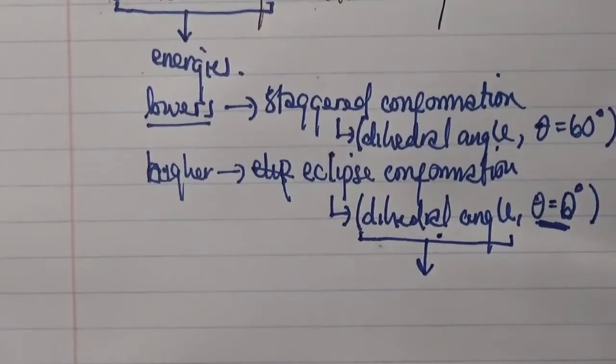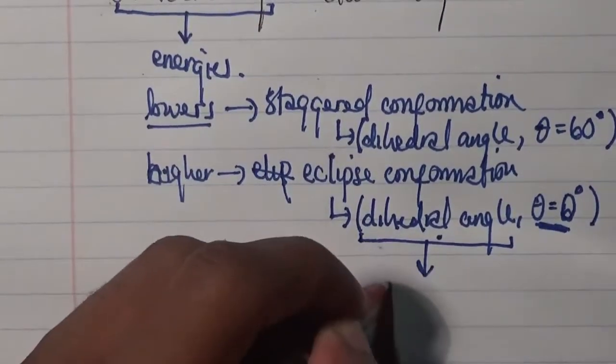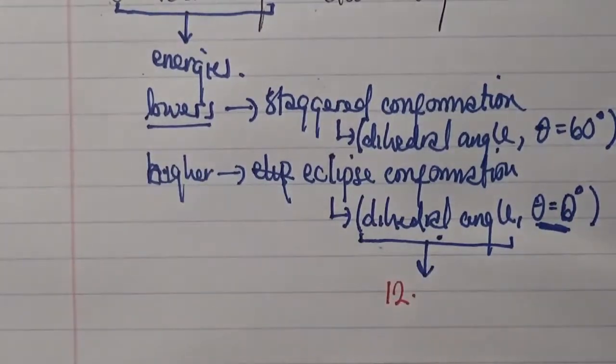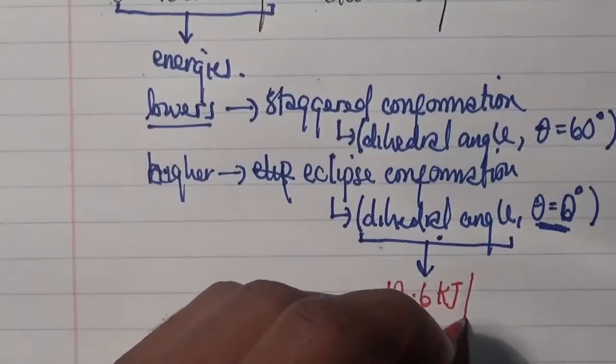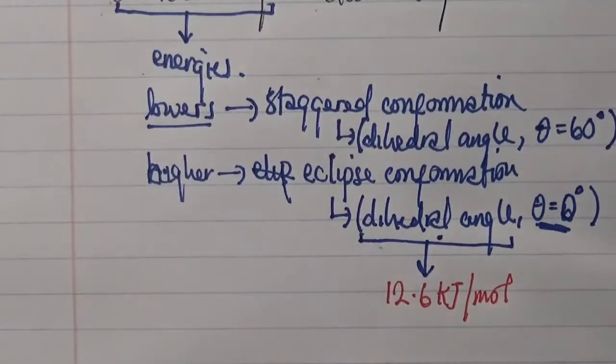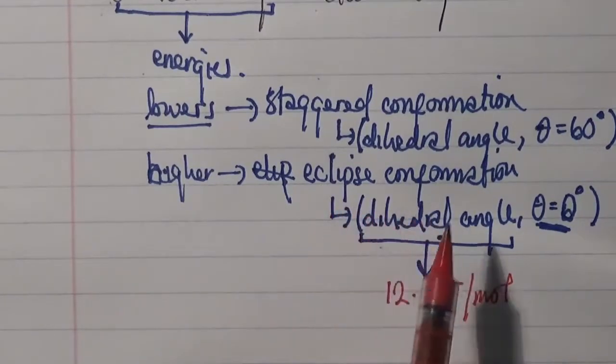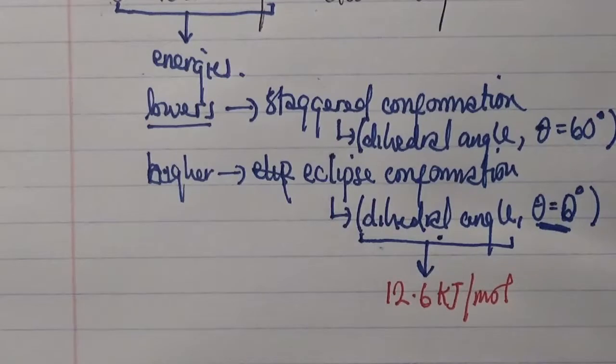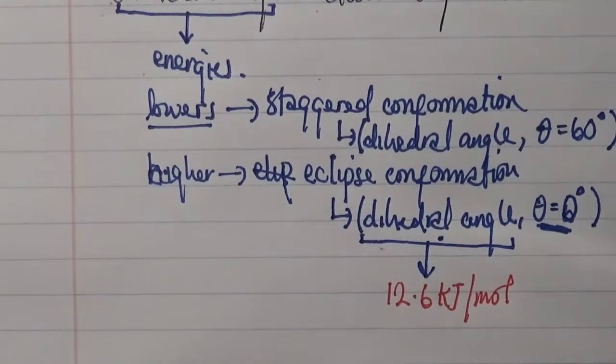I would say a potential energy increase of 12.6 kilojoules per mole. So that would be the potential energy increase enough to generate the eclipsed conformation as a result of the electron density and the repulsion between the front and the back C-H bonds. This repulsion needs to be overcome by introducing this particular energy, 12.6 kilojoules per mole.